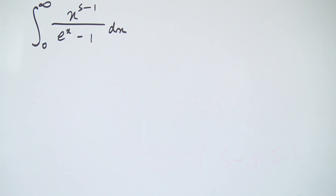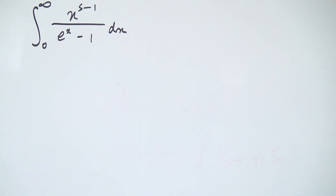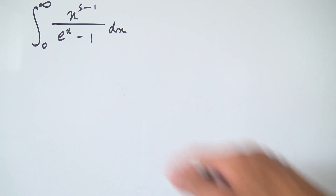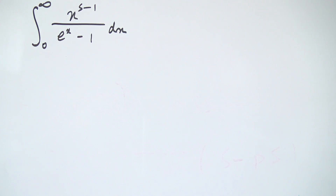Hello everybody, and today we're going to be having a look at one of the many integral representations of the Riemann zeta function. In this video we're going to be looking at this integral right here — the improper integral from 0 to infinity of x to the s minus 1 over e to the x minus 1. Our s here is our complex variable that will appear in the zeta function later on.